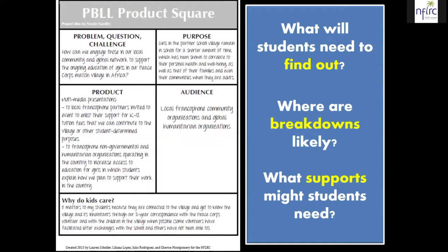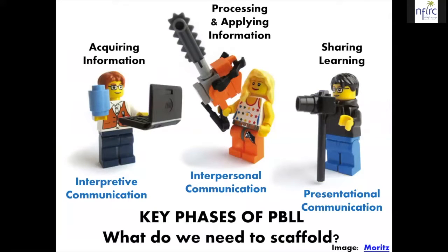So looking at our own product squares and asking ourselves: what are students going to need to find out from these texts? Where is student comprehension regarding these texts likely to break down? And what supports might students need? If we think about scaffolding texts as just finding all the hard words and translating them, we're not going to be nearly as successful as thinking about why these passages are difficult for students. So now we're going to shift toward thinking about what that might look like as we scaffold interpretive inquiry.